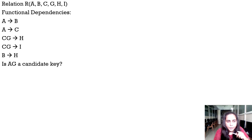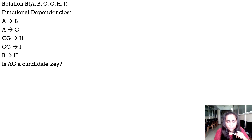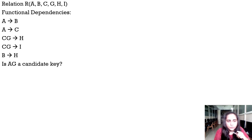Remember that R is the name of the table and A, B, C, G, H, I are all columns present in this table. These are the functional dependencies created on this particular relation, and the question is: is A,G a candidate key? I'm going to first show you how to calculate closure using a single attribute before going straight to A,G, so that you understand how closure is actually calculated.